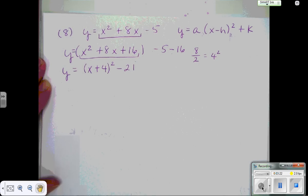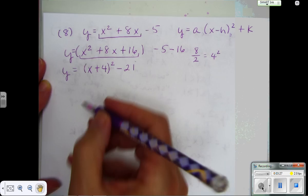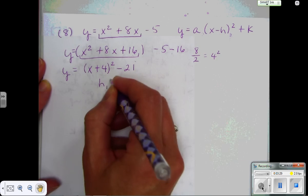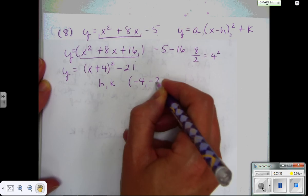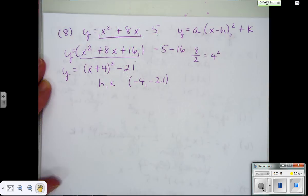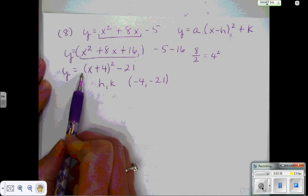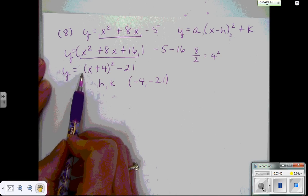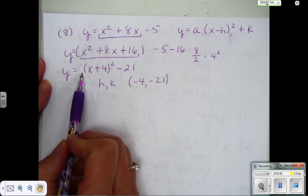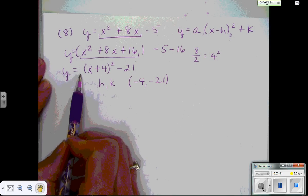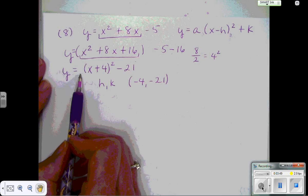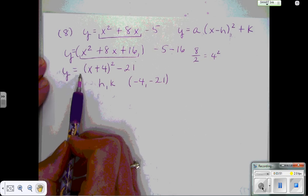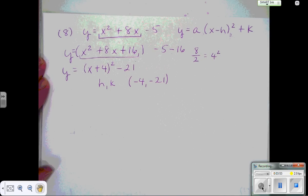Now I have it in vertex form. So my vertex, my hk, is negative 4, negative 21. That's where the vertex has shifted to. My a value is positive, so I know it's going to open up. I don't have anything other than a 1 that's multiplying the parentheses, so it's not going to have a vertical stretch or a horizontal stretch. And that's it. You're done with that problem.